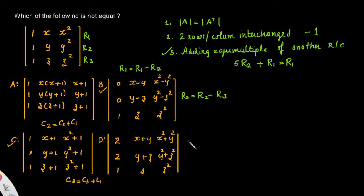Similarly for option D, we have R1 equal to R1 plus R2, and R2 is R2 plus R3. These are valid operations on determinants without changing its value.